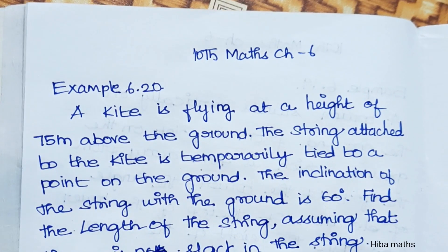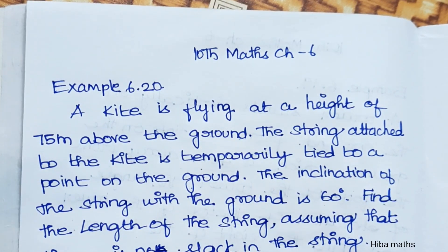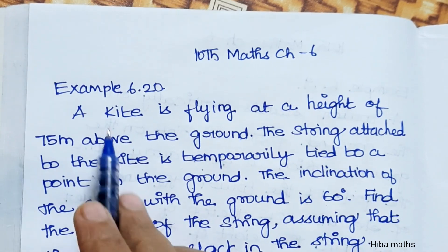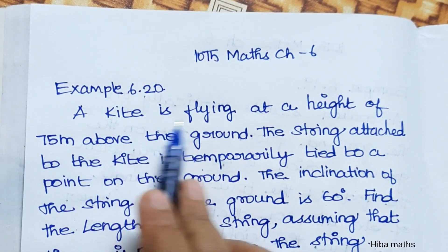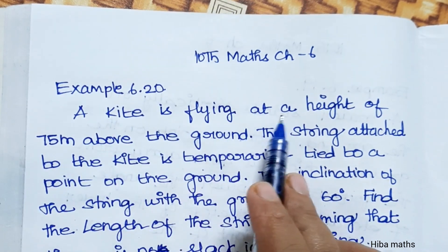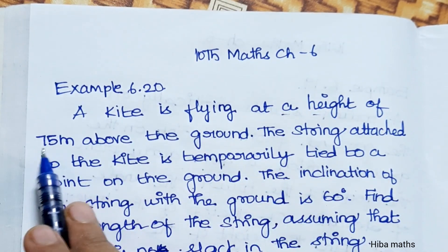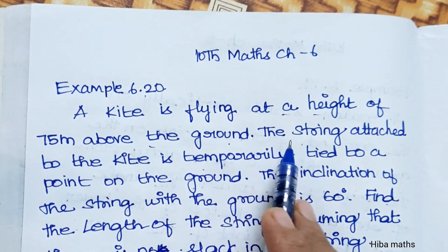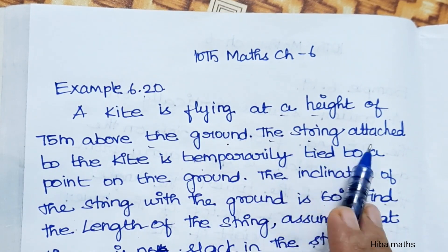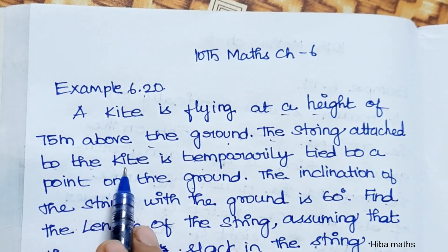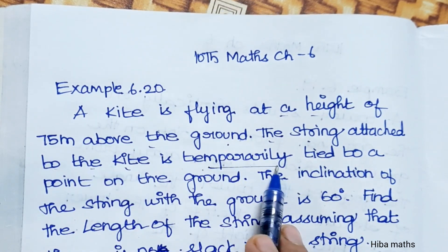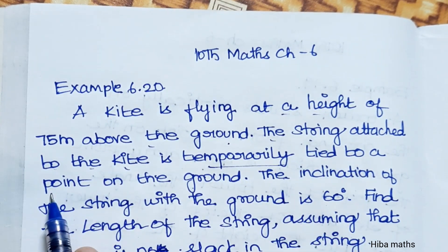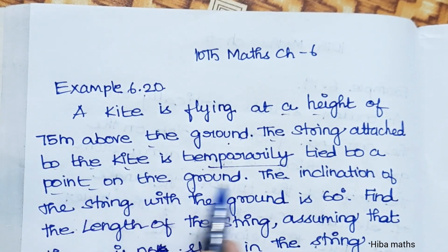Hello students, welcome to Hiva Max 10, Standard Max Chapter 6, Example 6.20. A kite is flying at a height of 75 meters above the ground. The string attached to the kite is temporarily tied to a point on the ground.